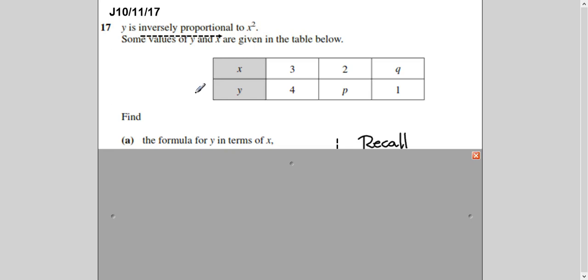So let's begin with the question. June 10 variant 1 question 17. Question is saying Y is inversely proportional to X squared and this table is given to you. There are three parts of the question. First is saying find the formula for Y in terms of X. So once you will have that formula then you can find out the value of P and Q. Here P is actually the value of Y when X is 2 and here Q is the value of X when Y is 1.